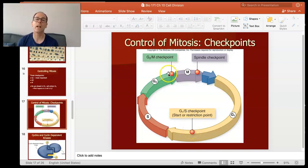There's also one here at the G2M checkpoint, and that's to make sure that the DNA was copied correctly. And then there is one at the end of mitosis called the spindle checkpoint, and that happens right before cytokinesis.